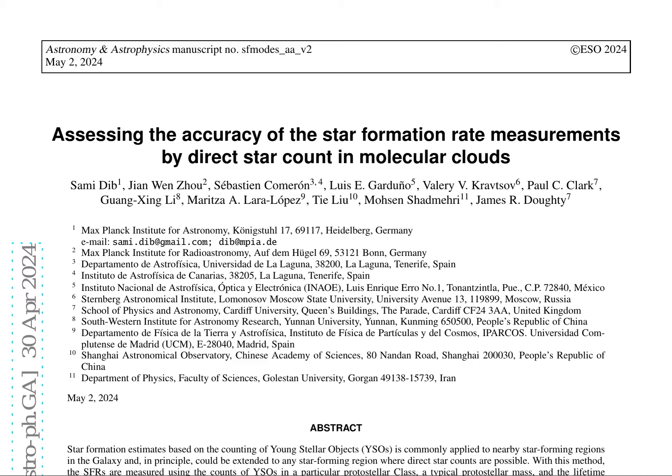Researchers have investigated the accuracy of star formation rate measurements using direct star counts in molecular clouds. This method, commonly applied to nearby star-forming regions, estimates the star formation rate by counting young stellar objects in a particular protostellar class, along with a typical protostellar mass and lifetime associated with that class. However, the underlying assumptions, such as a constant star formation history (SFH) and its validity for all protostellar classes, have not been fully tested.